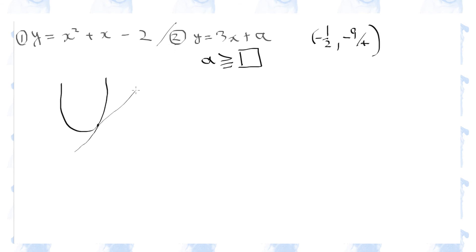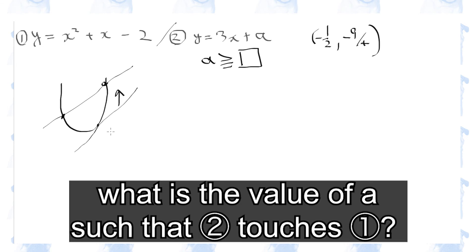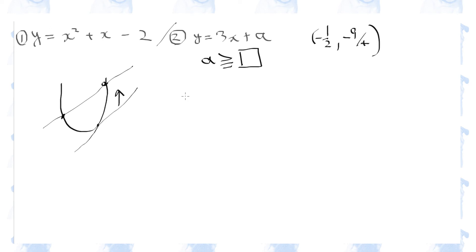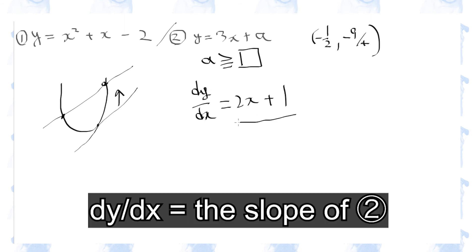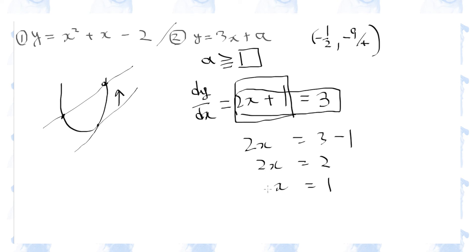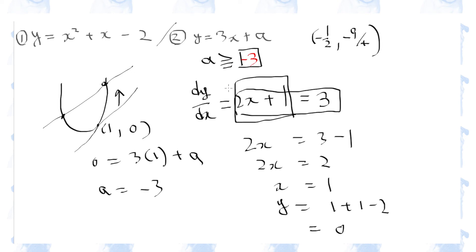In order for the two graphs to have one common point, the straight line must be tangent to the parabola. As the value of a increases, the straight line moves upwards and there will always be two points of intersection. So we need the value of a where the straight line becomes tangent to the parabola. Differentiating the equation of the parabola: 2x plus 1 must equal 3. We substitute this value into the parabola equation to find the y-coordinate, then plug into the straight line equation to find a. So a is greater than or equal to minus 3.